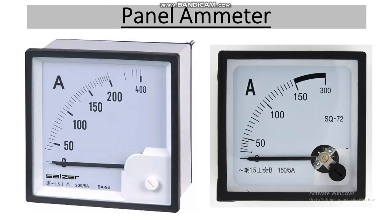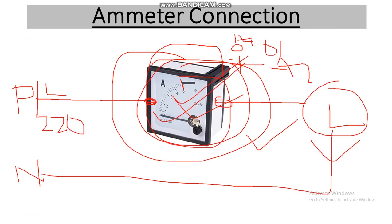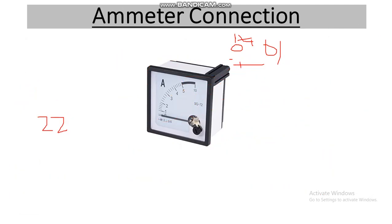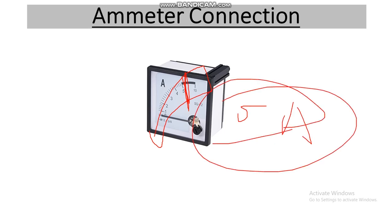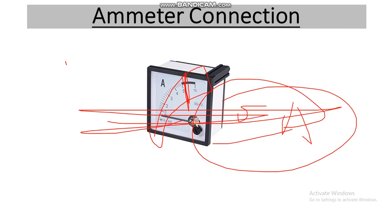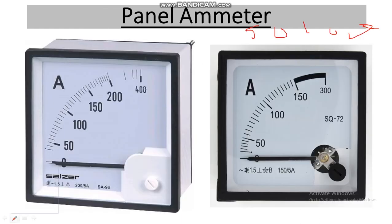Now consider a circuit where we have 50 ampere, 100 ampere, or 200 ampere currents. We cannot connect the previous 5 ampere ammeter directly — it will burn out because it can only measure current up to 5 ampere. For higher range current measuring, we have to use a ratio-type ammeter with a CT.